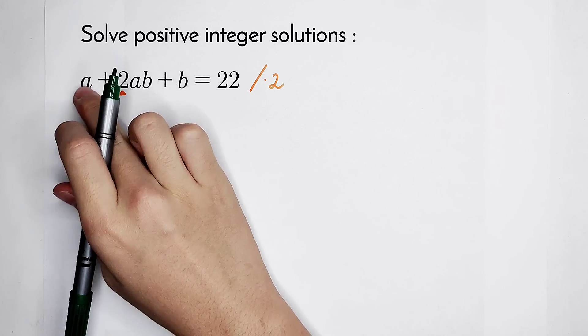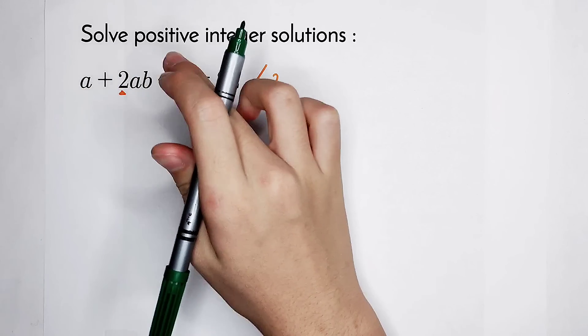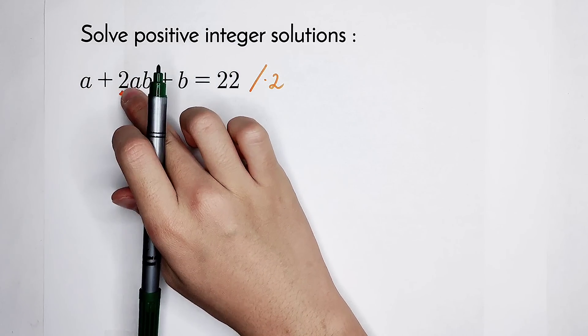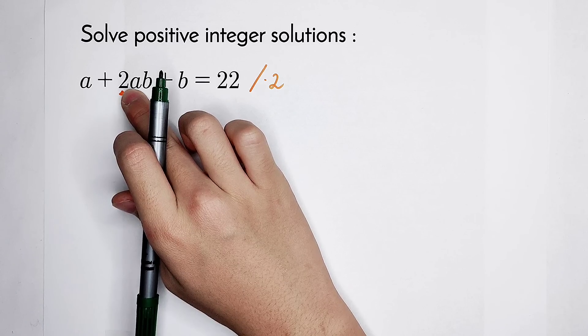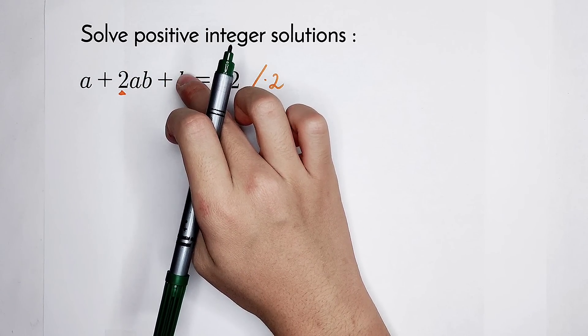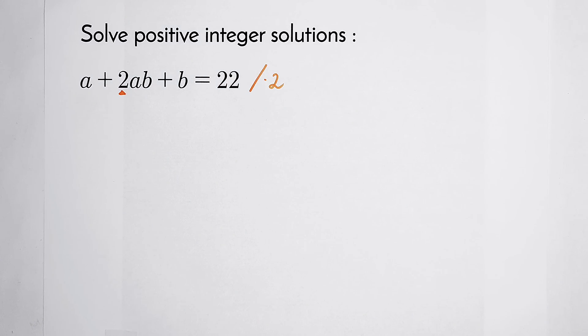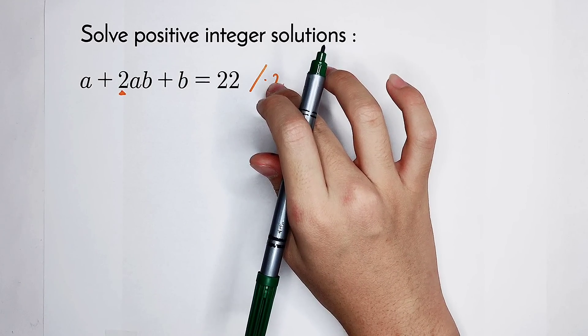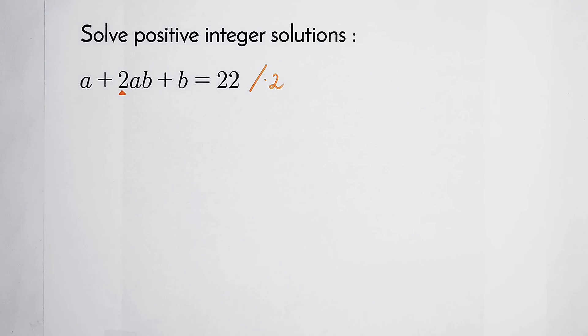Because 2a, 2b, and here it will become 4 times ab. 2a then times 2b, it will become 4ab. So this 2 which we are going to multiply by is very, very useful.